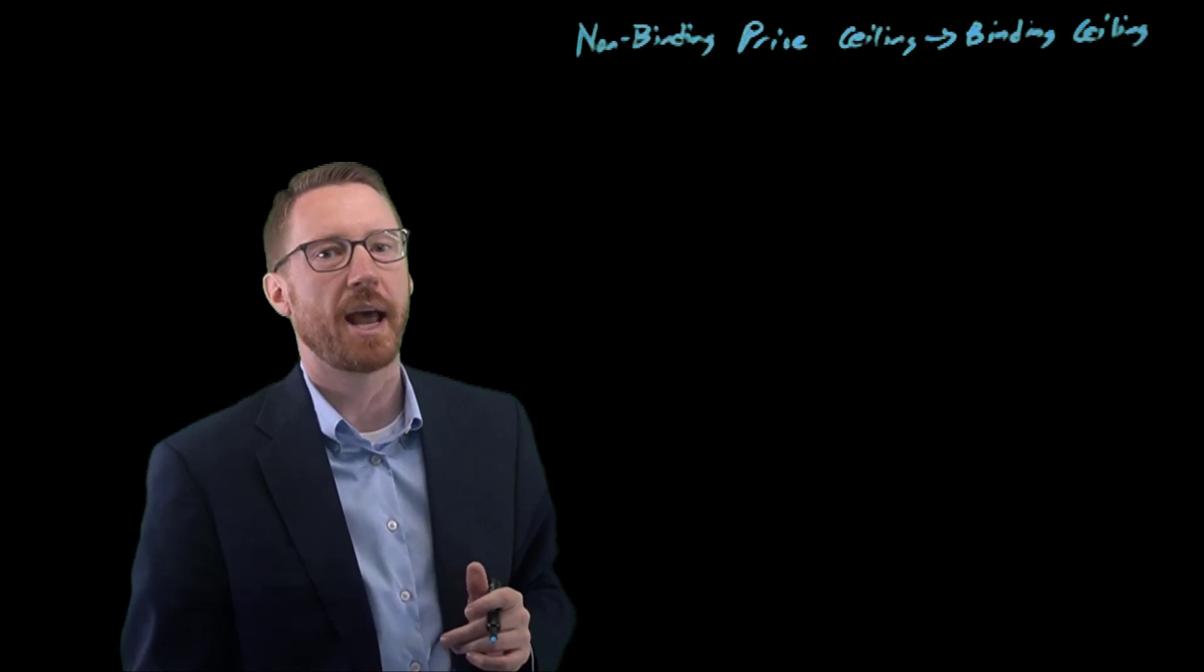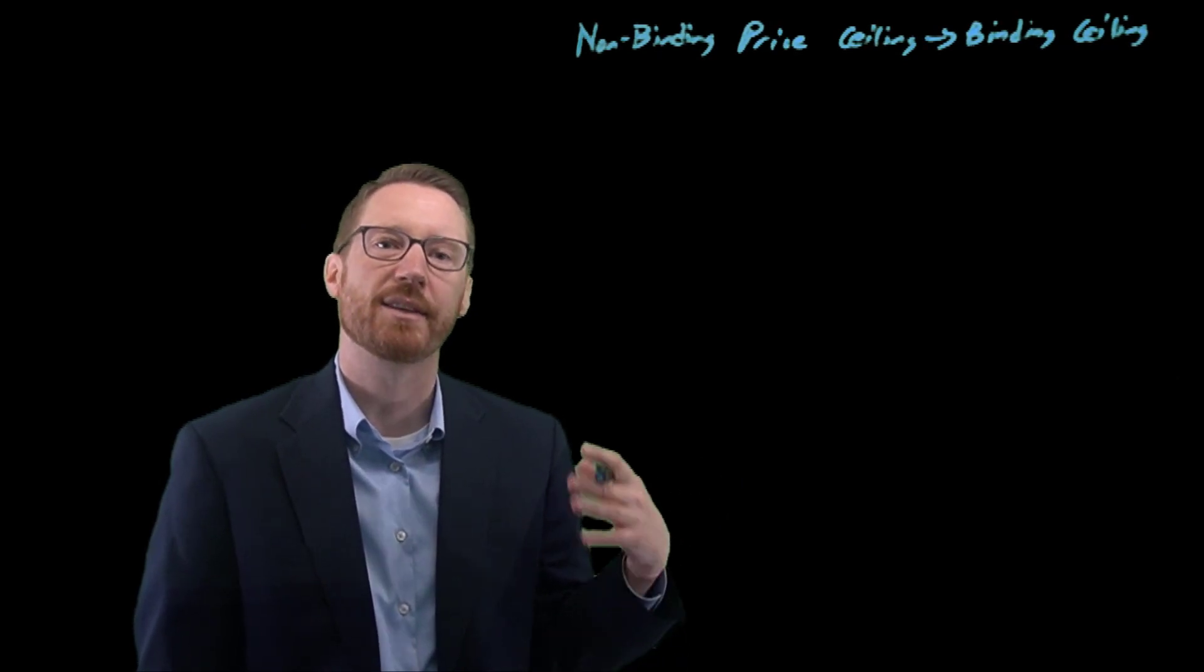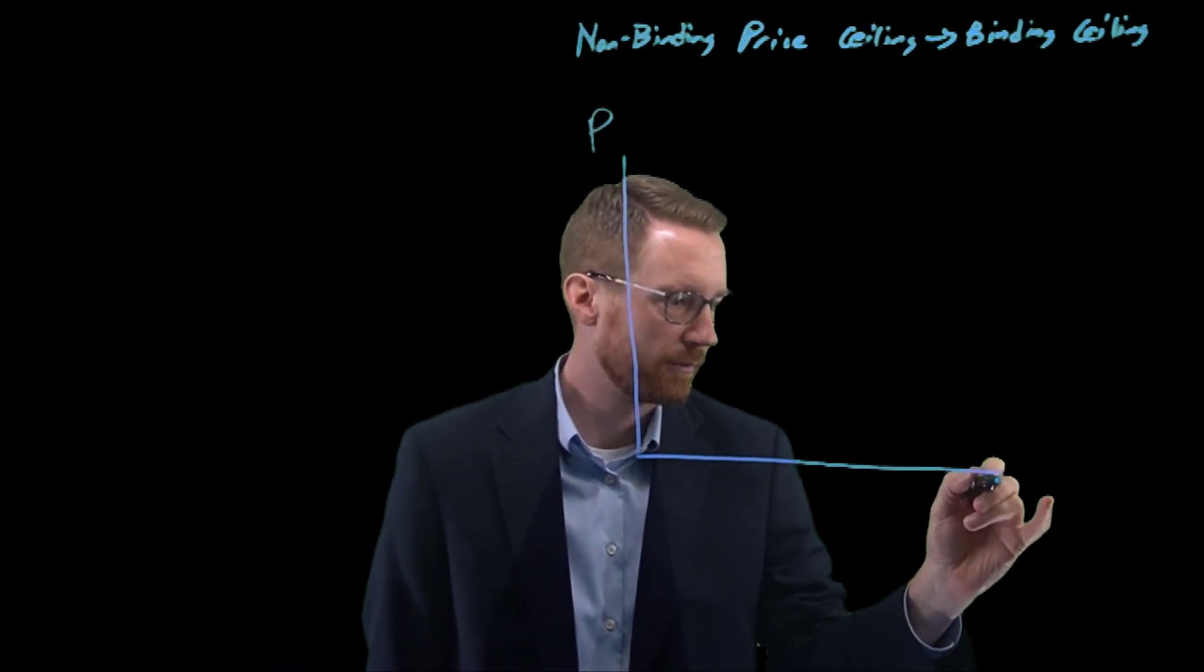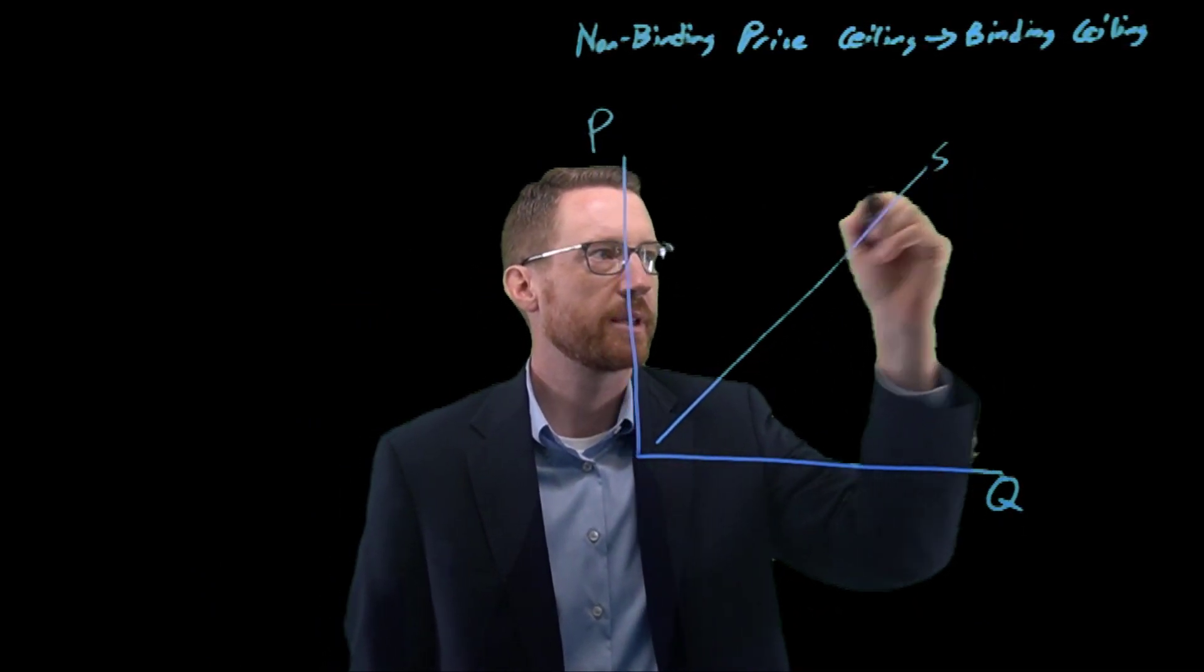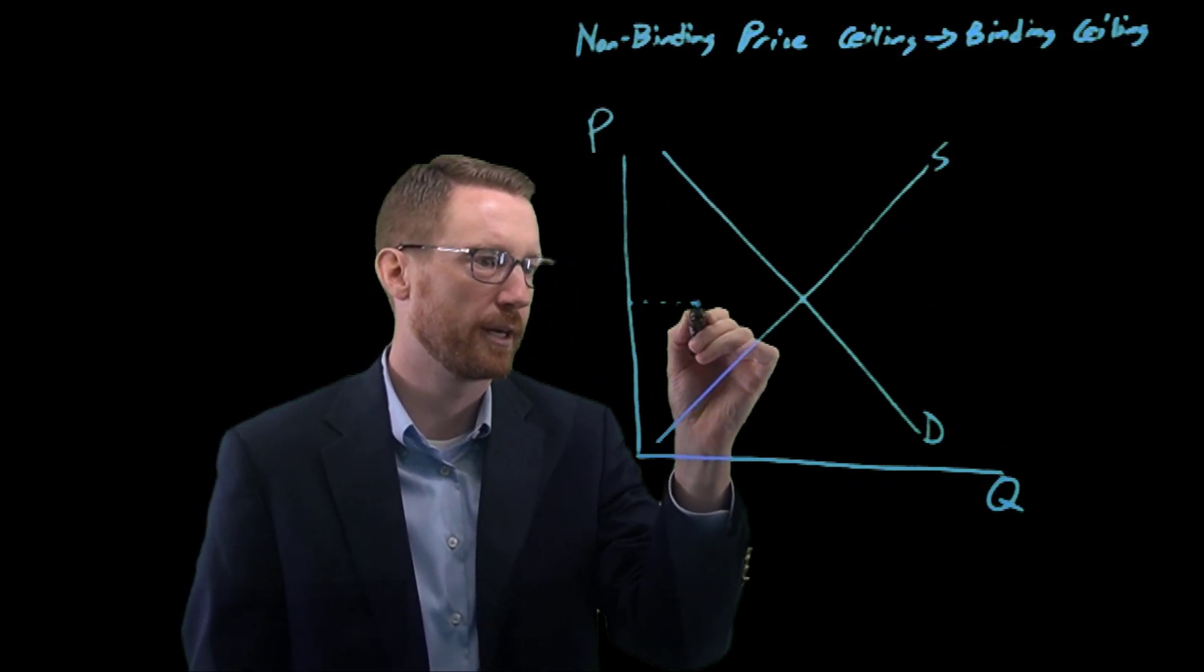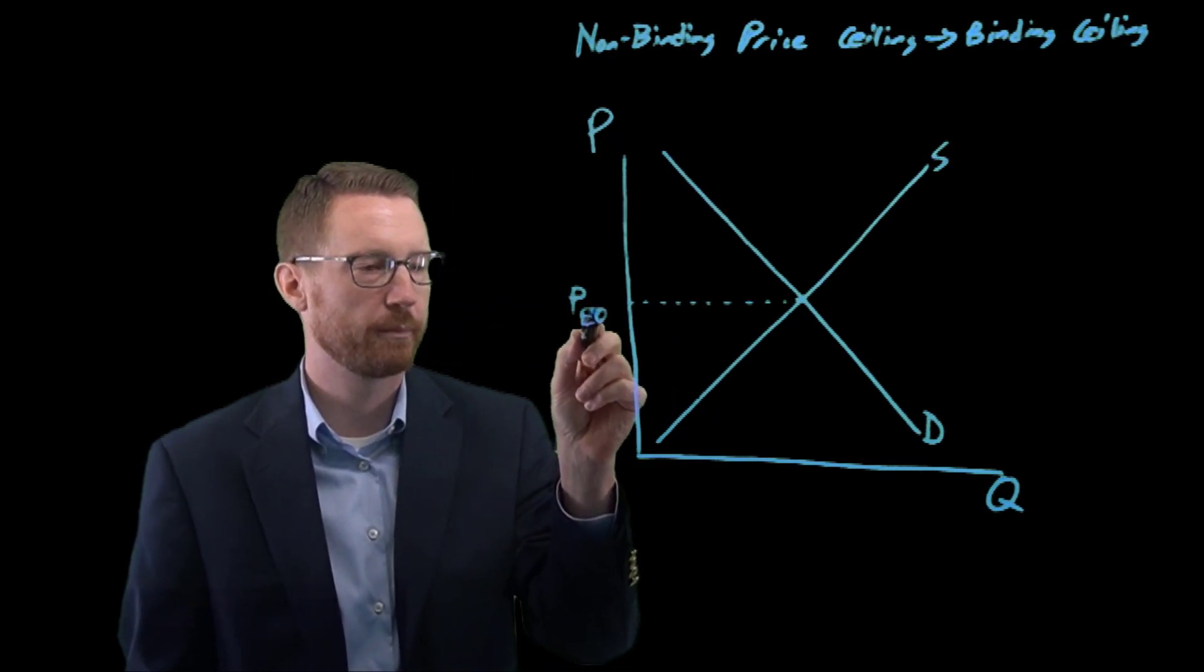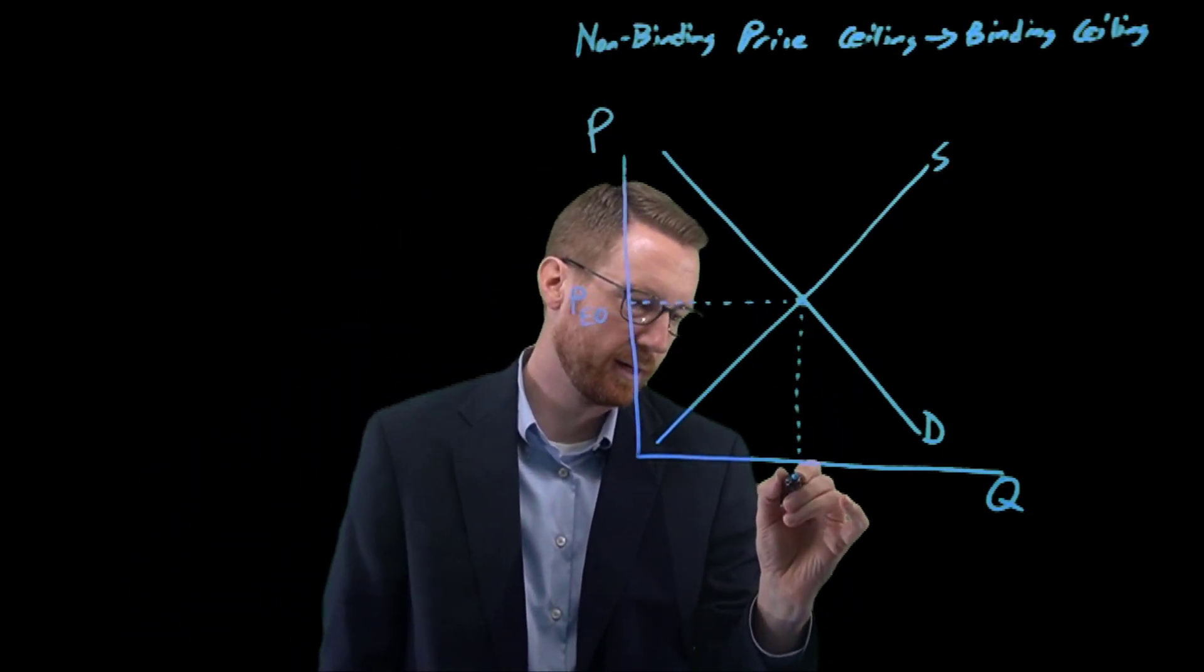What would cause this to happen? Let's start by setting up our supply and demand diagram and drawing in this non-binding price ceiling. We've got price versus quantity. We'll put in our upward sloping supply curve, throw in a downward sloping demand curve, and let's label in our initial equilibrium price.